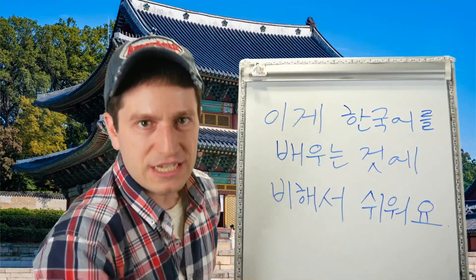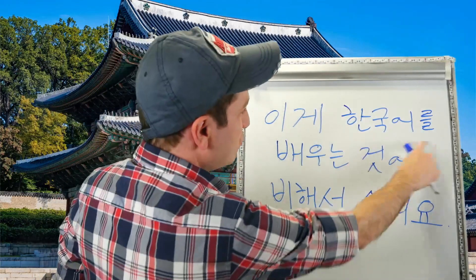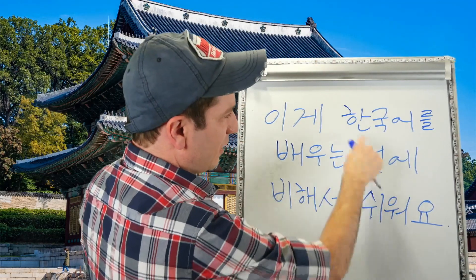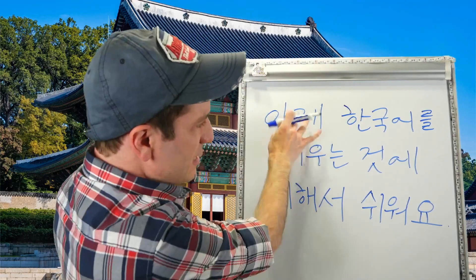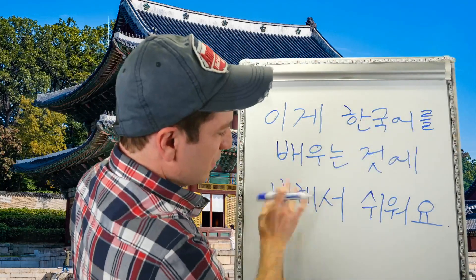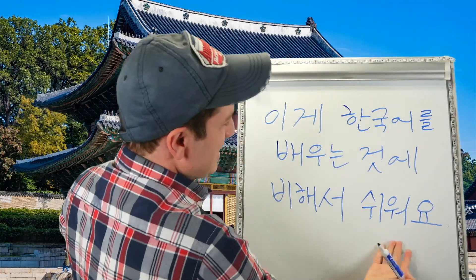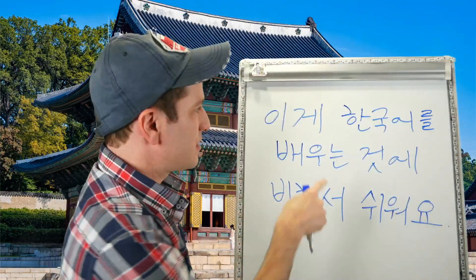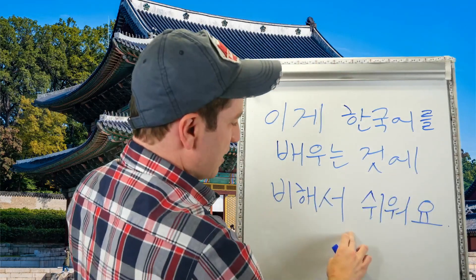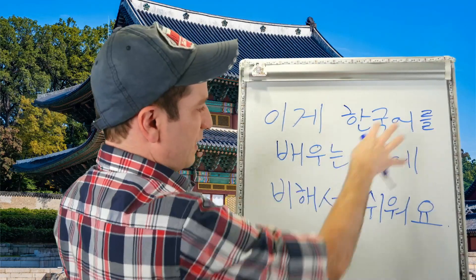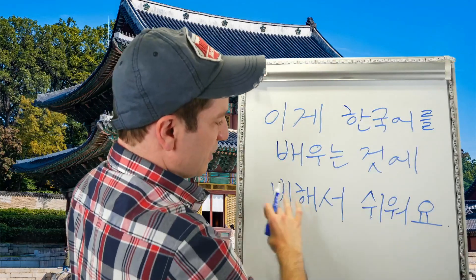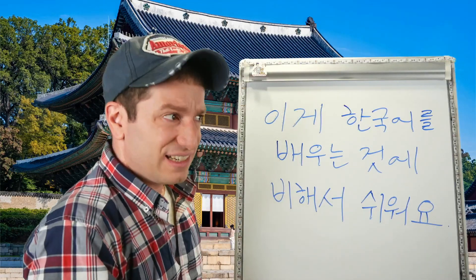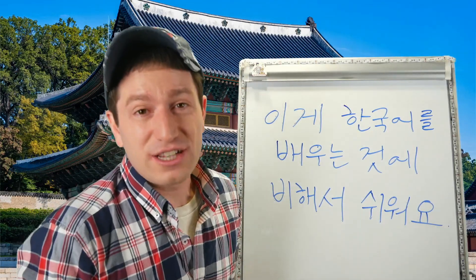Here's another example: 이게 한국어를 배우는 것에 비해서 쉬워요. So 이게 쉬워요 means 'this is easy,' and 한국어를 배우는 것에 비해서 means 'compared to learning Korean.' So the full sentence: this is easy compared to learning Korean.